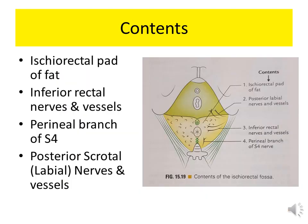The contents of the ischioanal fossa are mainly a pad of fat. Apart from that, it contains the inferior rectal nerves and vessels, the perineal branch of S4, and the posterior scrotal nerves and vessels in males or the posterior labial nerves and vessels in females.